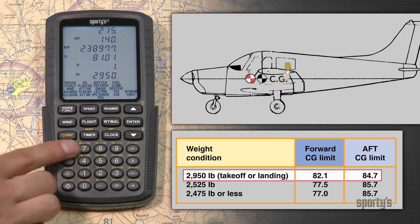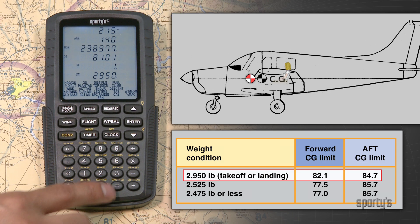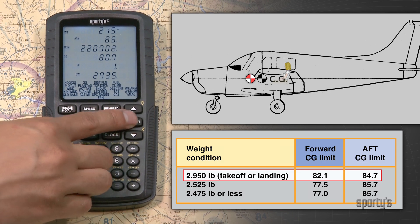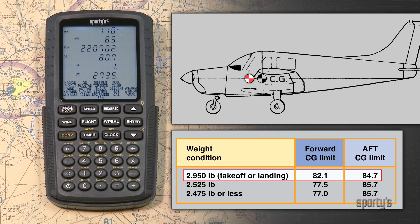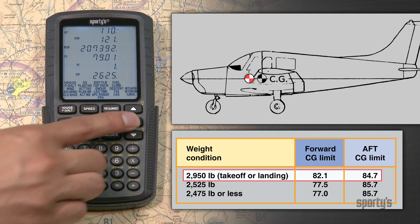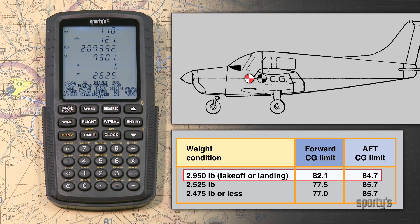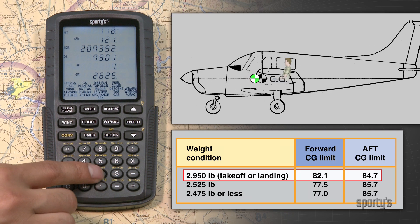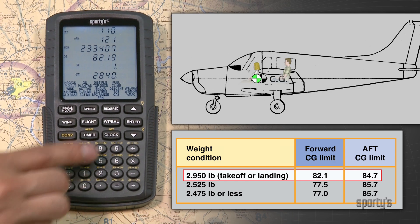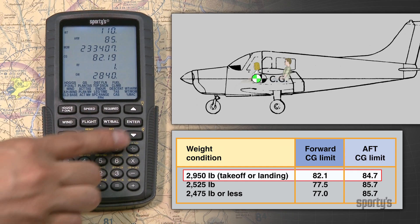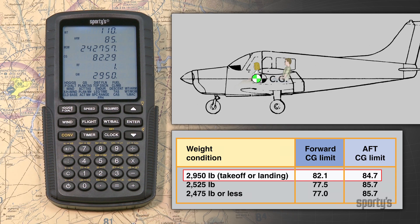Enter the weight of the 215 pound passenger as a minus by using the change of sign key. Then enter the arm. Do the same for the 110 pounder. The center of gravity with both off the airplane is 79.01 inches aft of datum. Now put them back: the 215 pounder at the 121 inch arm, and the 110 pounder in the front seat at the 85 inch arm. The new center of gravity is 82.29 inches aft of datum and the moment index is 2,427.57. Both weight and center of gravity are now within limits.